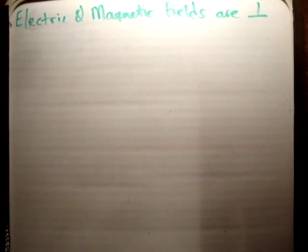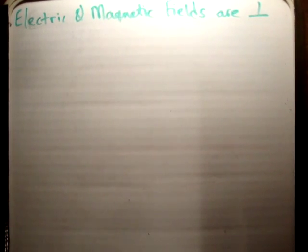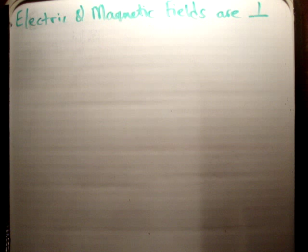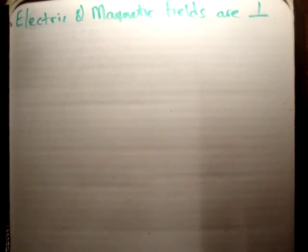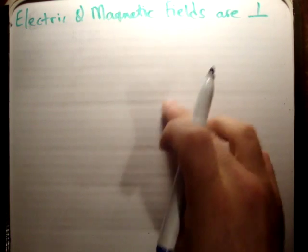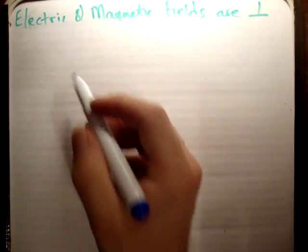k gives you the direction of propagation. So the first thing I'm going to do now is try and work out why the electric field is perpendicular to the k vector.